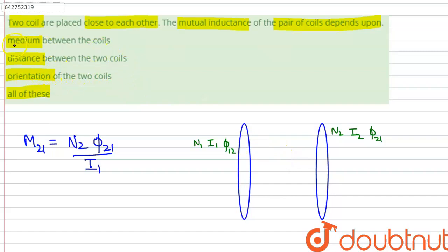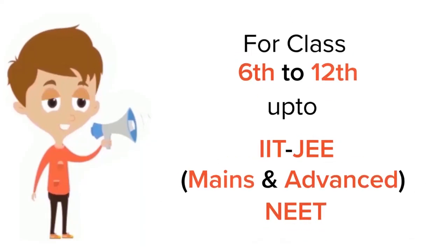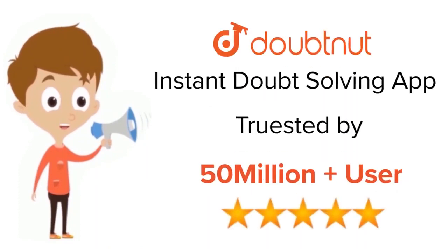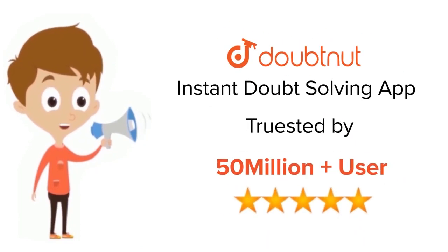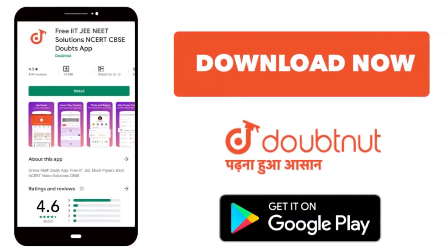Therefore, mutual inductance is dependent on the medium between the coils, the distance between the coils, and the orientation of the two coils. The answer is option D — all of these.